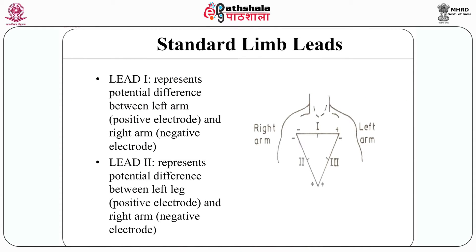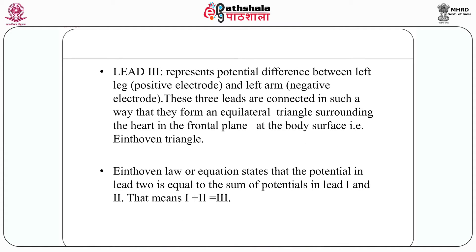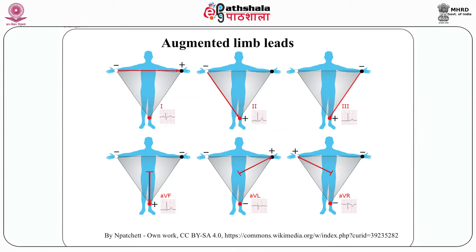The standard limb leads: Lead I represents the potential difference between the left arm (positive electrode) and the right arm (negative electrode). Lead II represents the potential difference between the left leg (positive) and the right arm (negative). Lead III represents the potential difference between the left leg and the left arm. These three leads are connected to form an equilateral triangle surrounding the heart in the frontal plane — the Einthoven Triangle. The Einthoven law states that the potential in Lead II equals the sum of Lead I and Lead III (Lead I + Lead III = Lead II).